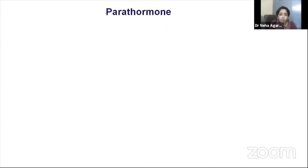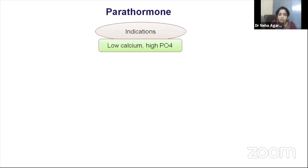Parathormone (PTH) is a thermolabile hormone and its collection and transport are critical — it must be collected immediately and transferred on ice before it degrades, giving a falsely low value. The indication to measure PTH is any child presenting with low calcium and high phosphorus. As a reminder from physiology, PTH is a hypophosphatemic hormone — so the only two conditions explaining high phosphorus with low calcium are chronic kidney disease or PTH insufficiency/resistance.